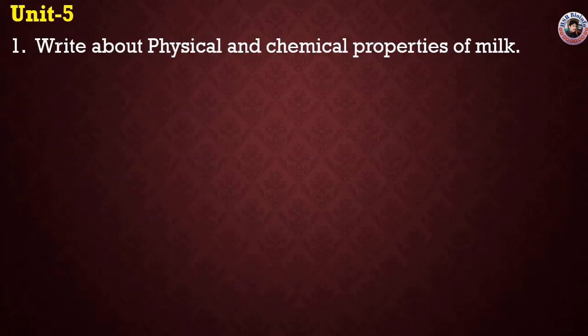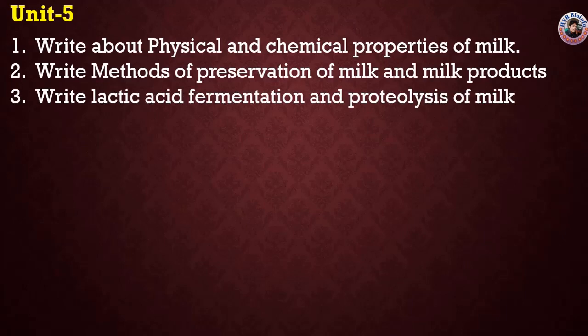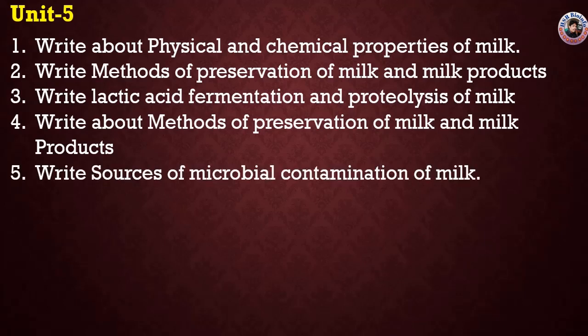Coming to Unit 5 — First question: Write about the physical and chemical properties of milk. Second question: Write methods of preservation of milk products. Third question: Write about lactic acid fermentation and proteolysis of milk. Fourth question: Write methods of preservation of milk and milk products. Fifth question: Write the sources of microbial contamination of milk. Here we have 5 questions, and the first 4 are the priority to cover.